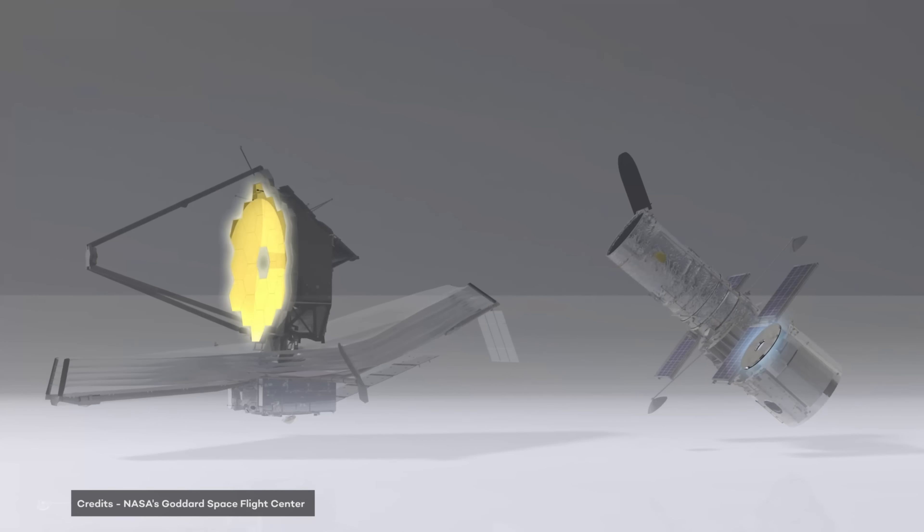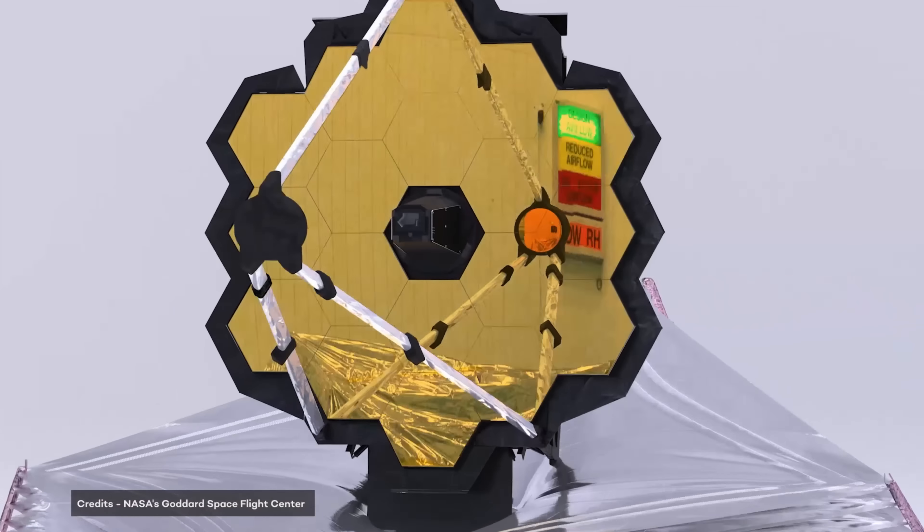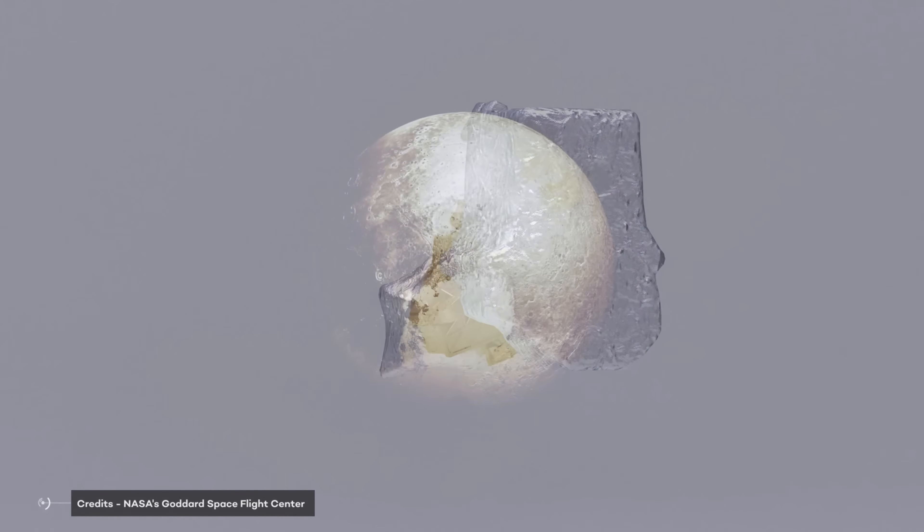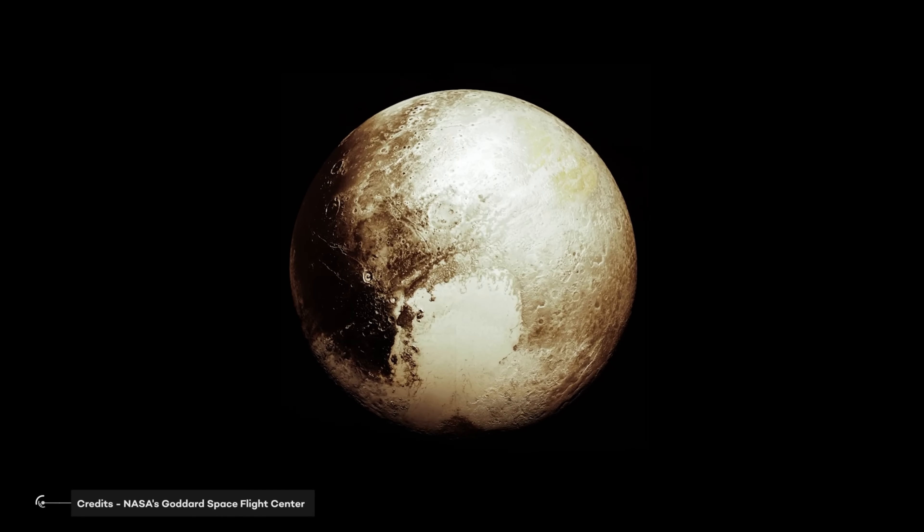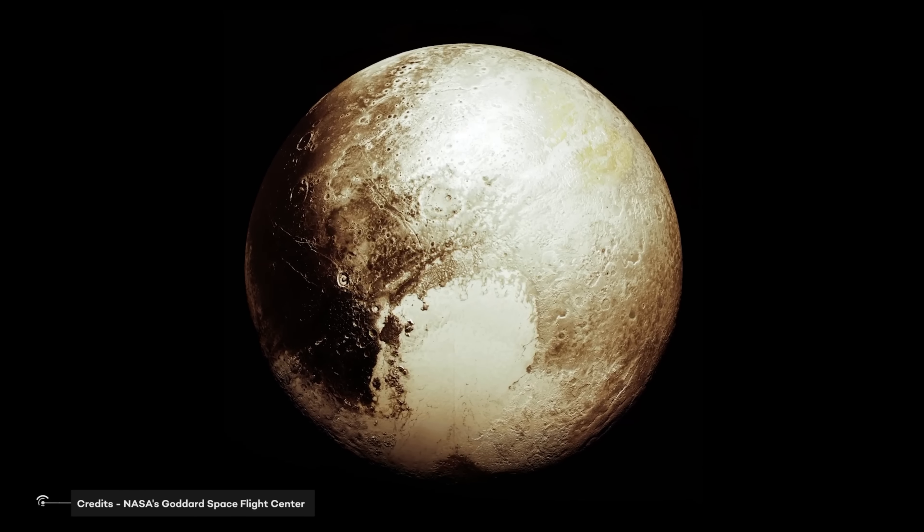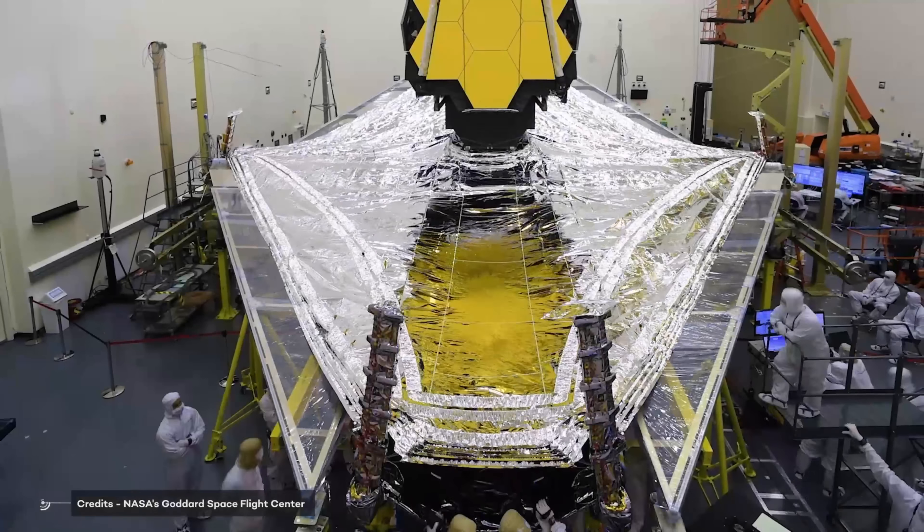The primary mirror in the James Webb Space Telescope is six times larger than the ones used in the Hubble Space Telescope. James Webb Space Telescope is also more sensitive to infrared waves than Hubble. This allows the James Webb to detect objects that are too faint for Hubble to see.